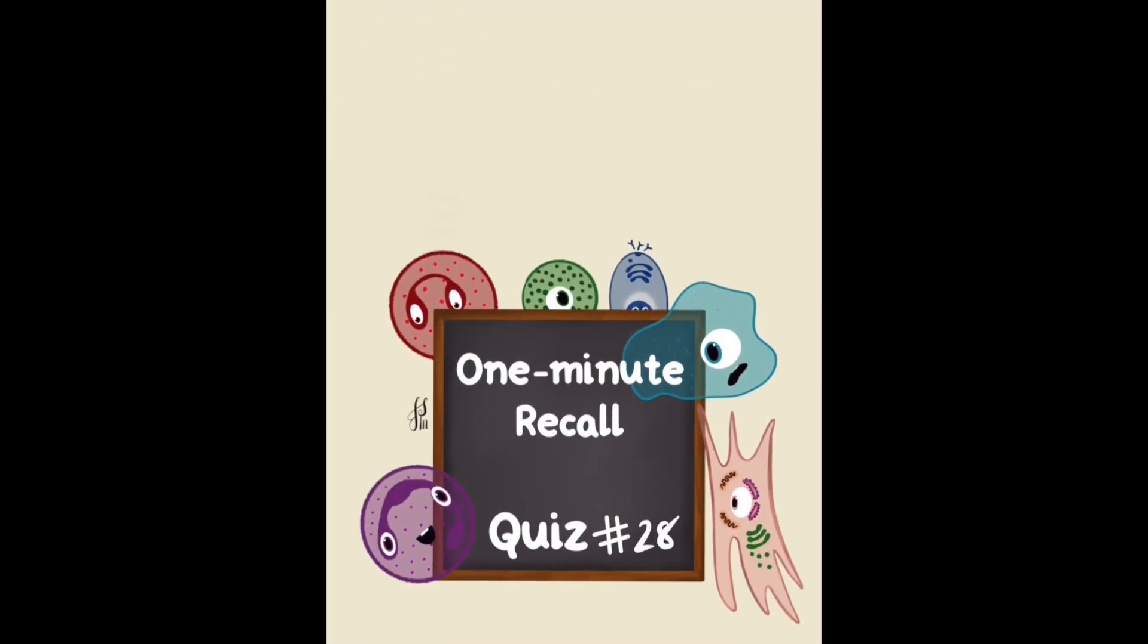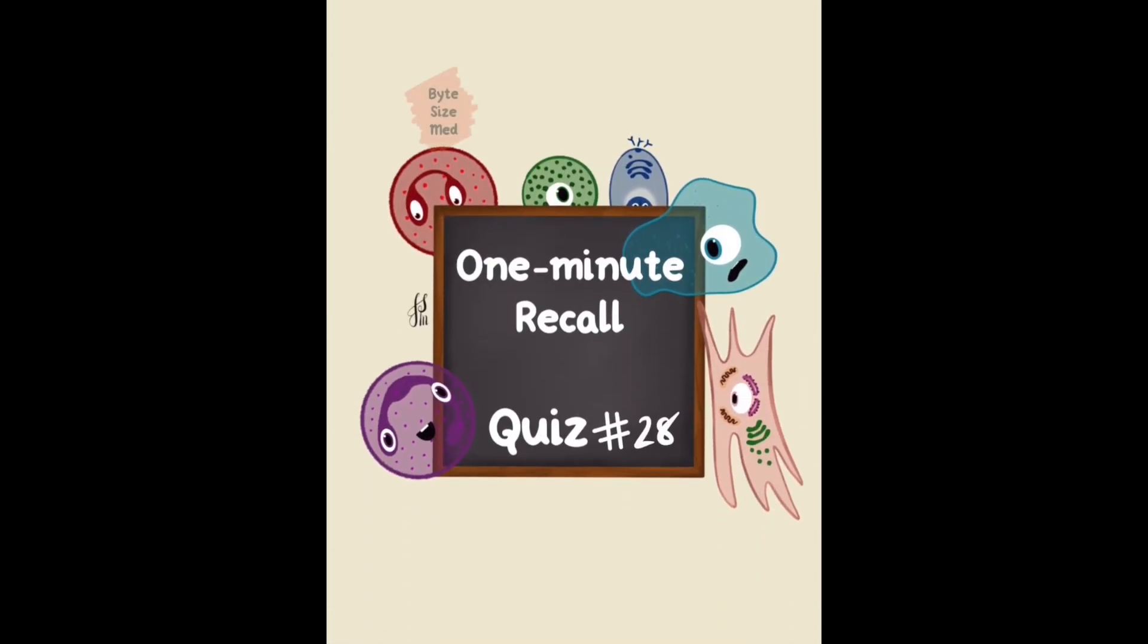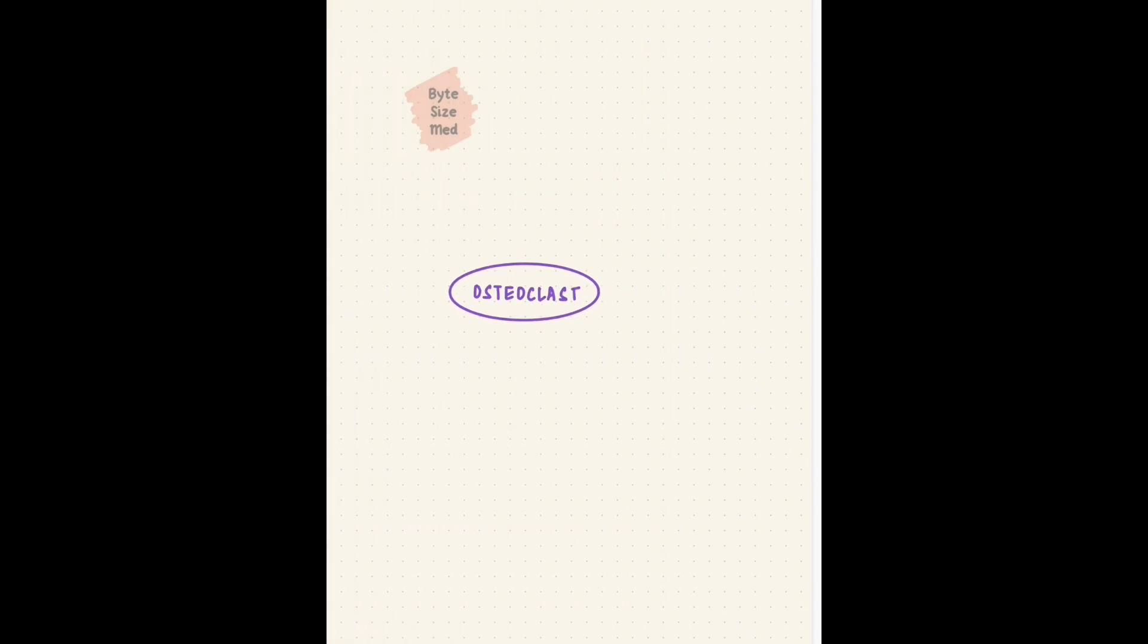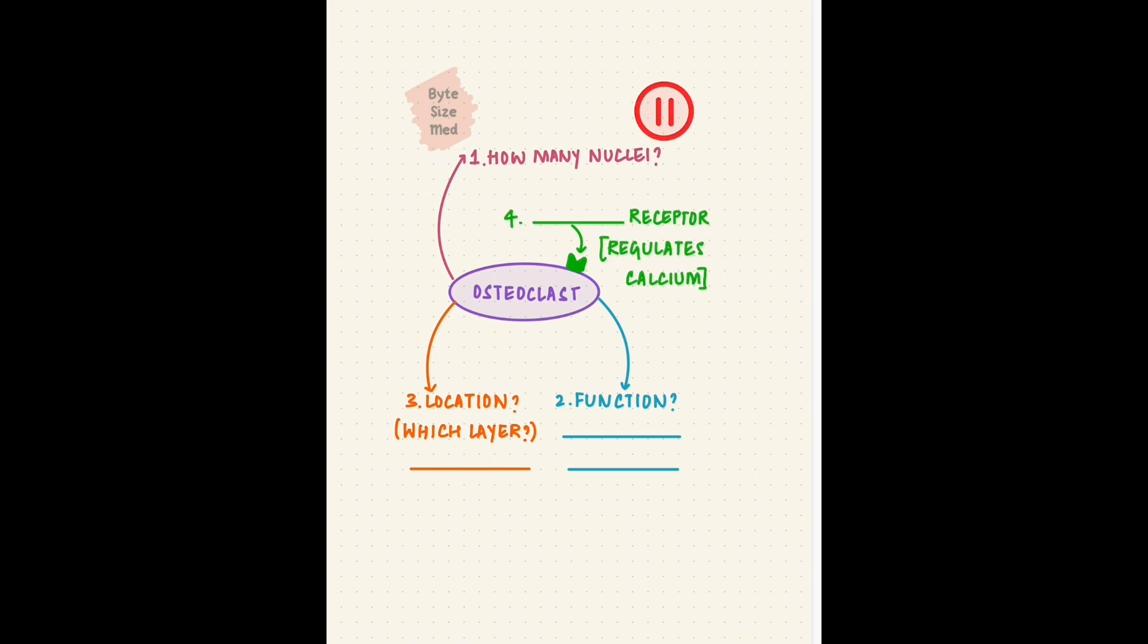Bone has more than just one kind of cell. Our next one is the osteoclast. Your task is to recall: how many nuclei this cell has, what's its function, what layer of bone is it located in, and it has a receptor for a hormone that can regulate calcium - name that hormone. Pause the video here.